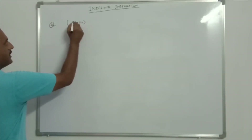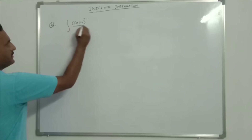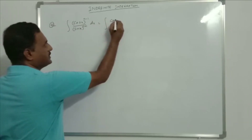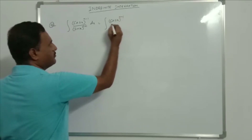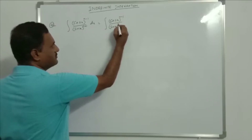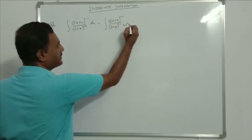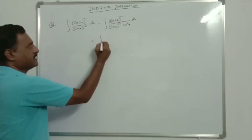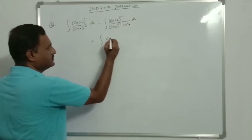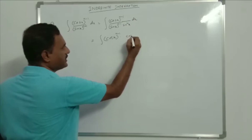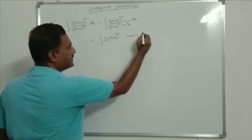Integration of cos^(n-1)x / sin^(n+1)x dx. This is equal to integration of cos^(n-1)x / [sin^(n-1)x · sin²x] dx. Here cos x/sin x is cot x, so this becomes integration of cot^(n-1)x · (1/sin²x) dx, which is cot^(n-1)x · cosec²x dx.